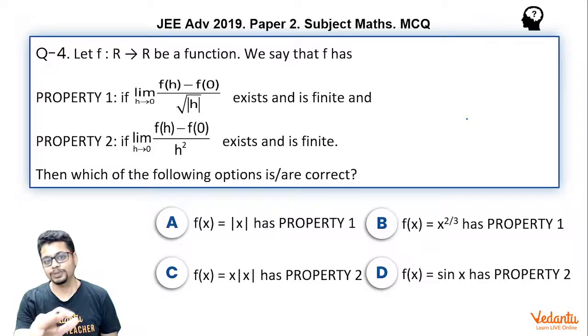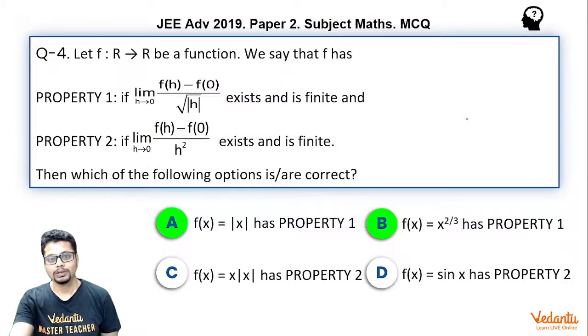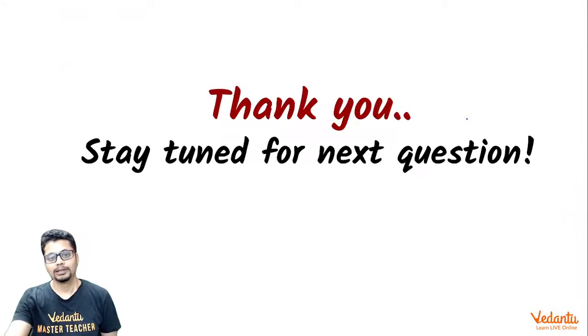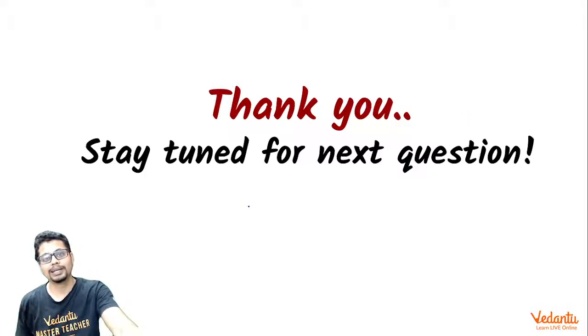So options A and B are correct: f(x) = |x| has Property 1, and f(x) = x^(2/3) has Property 1. Options C and D are wrong. This is one of the easiest questions you may encounter in JEE Advanced—the kind you must nail. Thanks for listening, stay tuned for the next question.